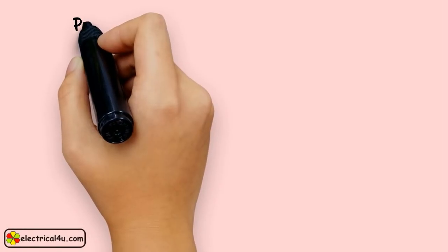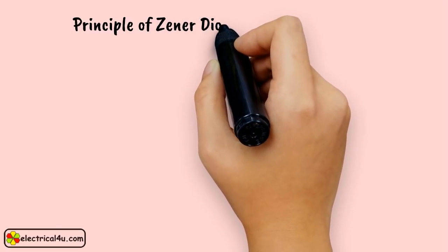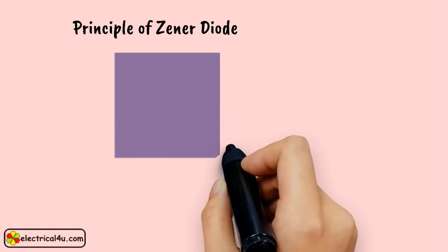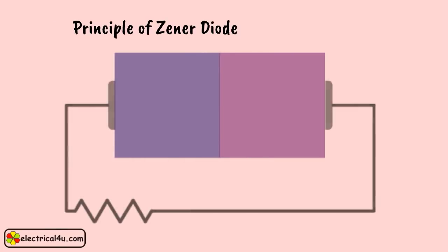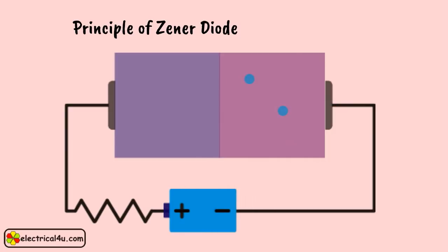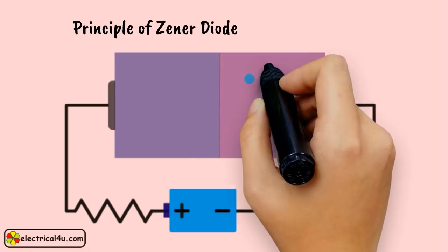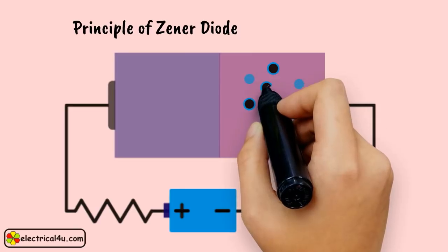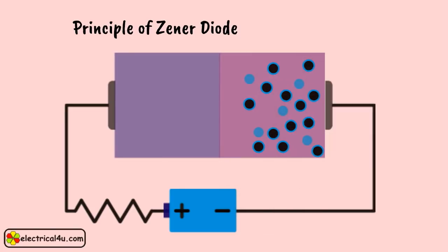Now we will come to the working principle of Zener diode. When a PN junction diode is reverse biased, the depletion layer becomes wider.